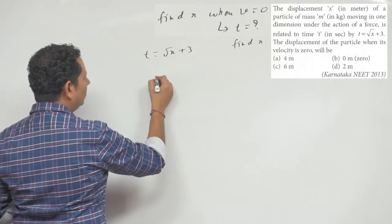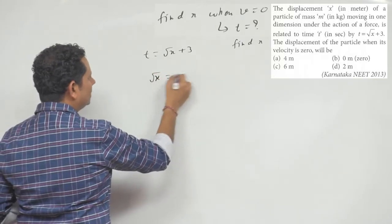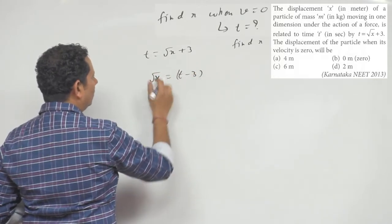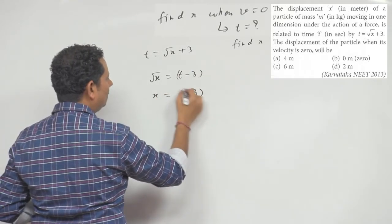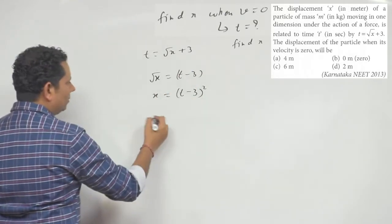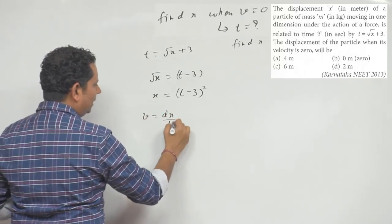Let's rearrange this equation: square root of x equals t minus 3. Squaring both sides, x equals (t minus 3) squared. Now, velocity is dx/dt.